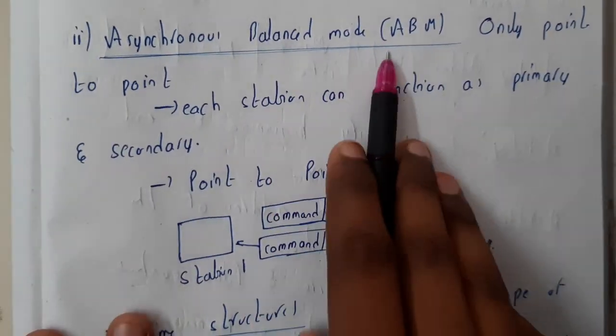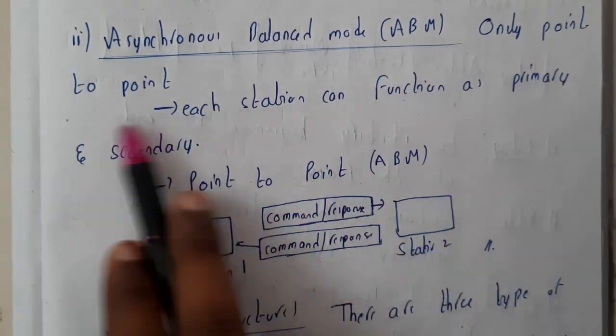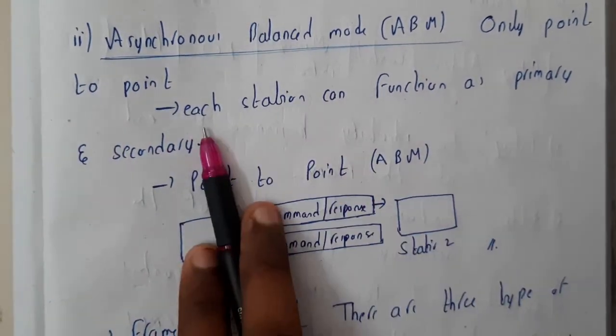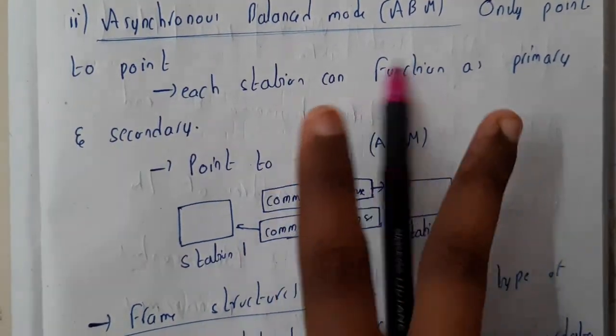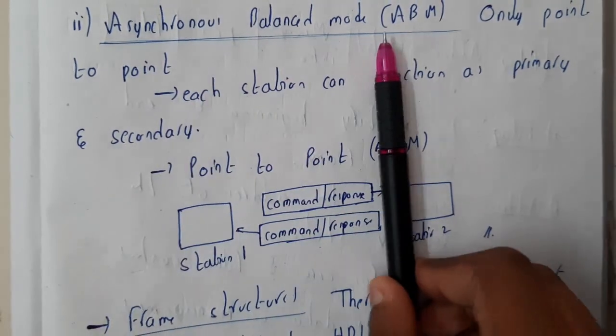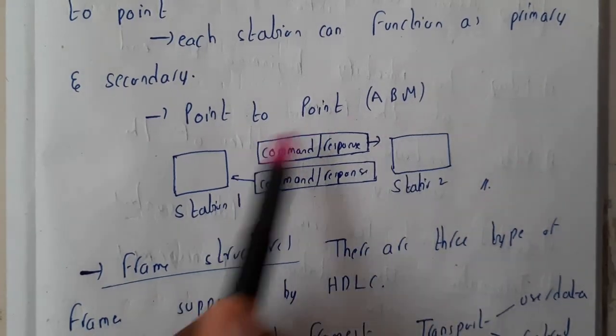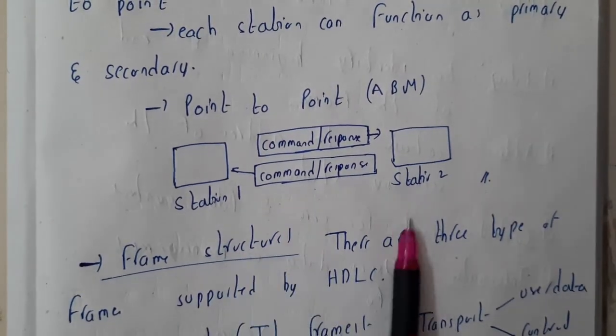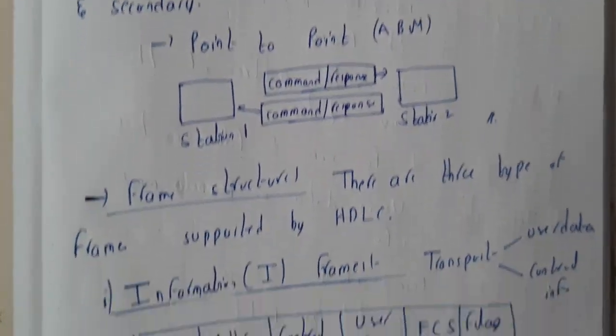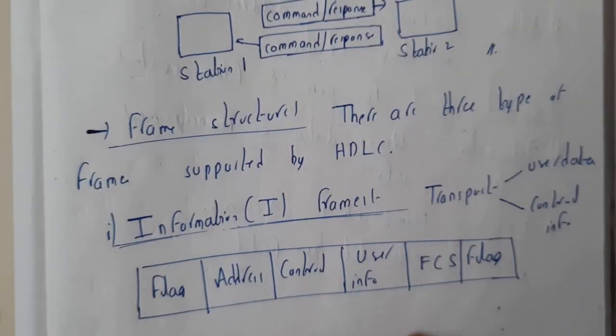Asynchronous balanced mode means only point-to-point, which is compulsory. Each station can function as primary and secondary, so they can send data or receive data. They will send the command or respond to the command. Station 1 and station 2 communicate this way. The structure of HDLC is in this format.